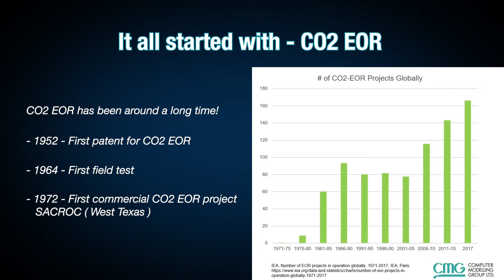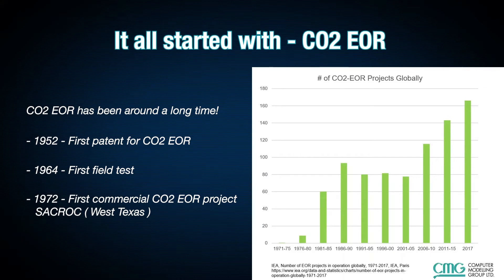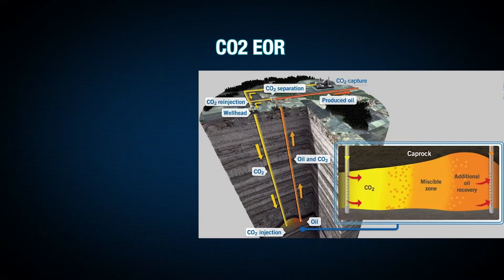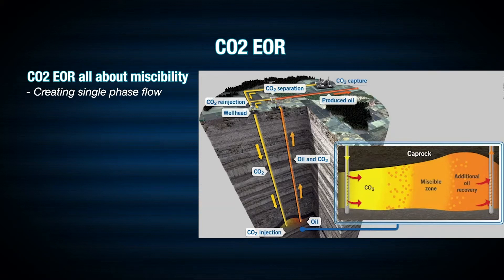That's why on the graph on the right you see we're starting in the early 1970s. We've been going for about 50 years with CO2 EOR and learning about that process for an extensive amount of time. CO2 EOR is really about generating miscibility and creating single-phase flow. If you have multi-phase flow in a reservoir, you typically will leave behind some residual amount of oil as the phase pushing the oil through the reservoir essentially leaves stuff behind.